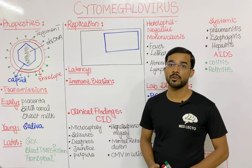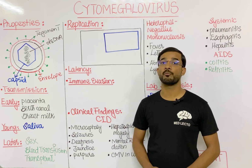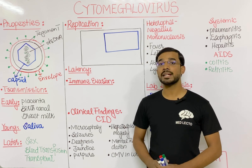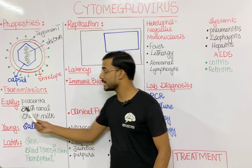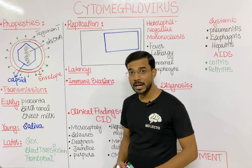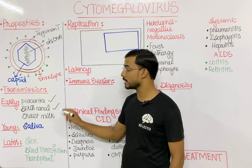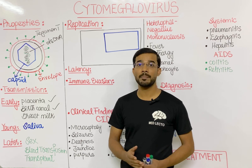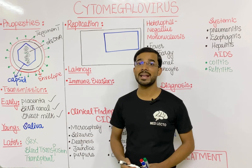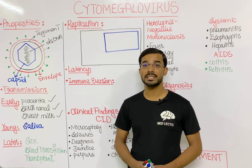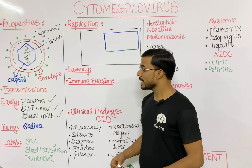If we look at the transmission — how cytomegalovirus transmits from one person to another — we have categorized it into three stages. First, in early life, cytomegalovirus can transmit through the placenta during pregnancy. It can also be transmitted during delivery when the baby passes through the birth canal, and lastly through breast milk during feeding from mother to baby.